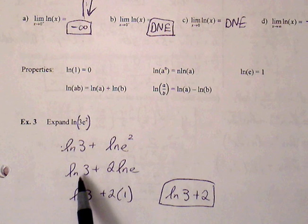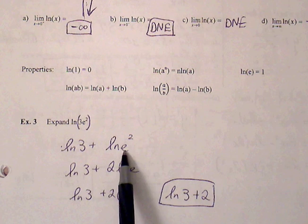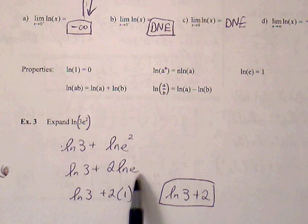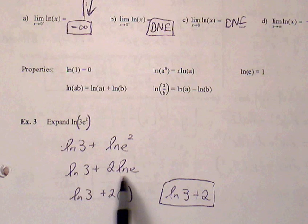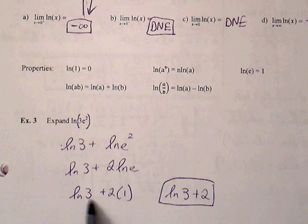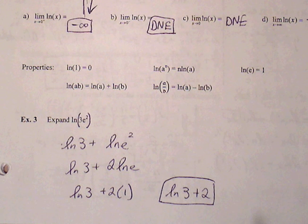Next step, we can't do anything more with LN of 3, but this LN of E squared, we can bring this exponent down in front to LN of E. And then 2 LN of E becomes 2 times 1, 2 times 1 is 2, plus LN of 3. These are not like terms, we'll leave it as LN of 3 plus 2.